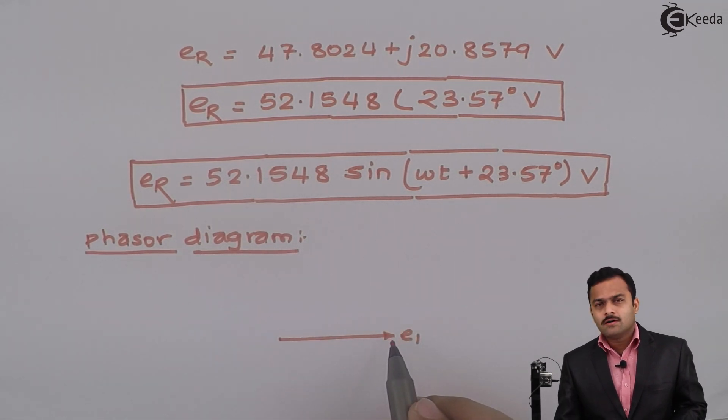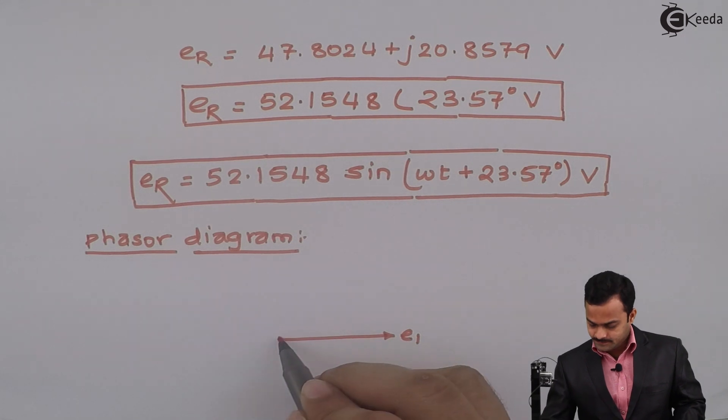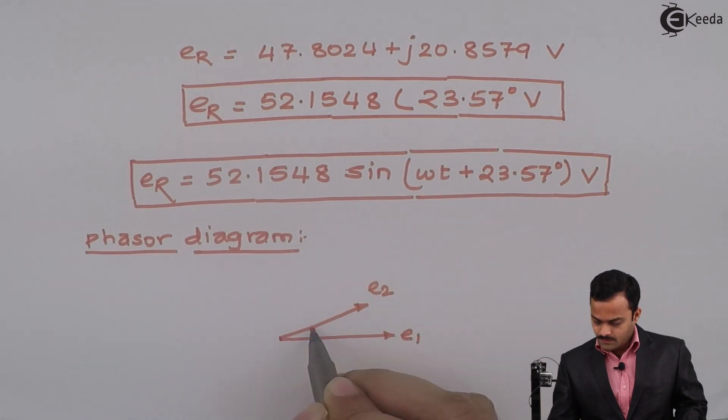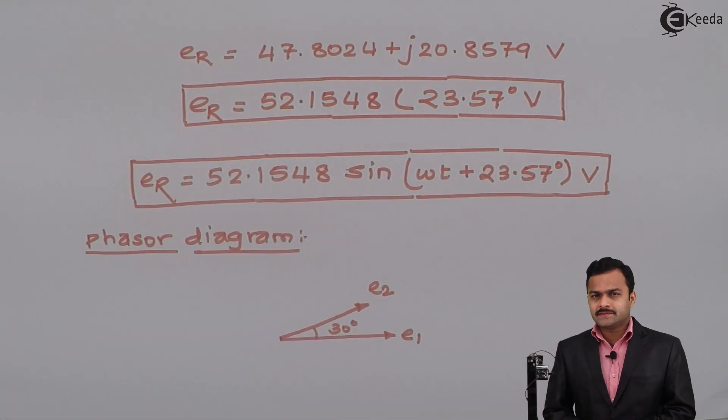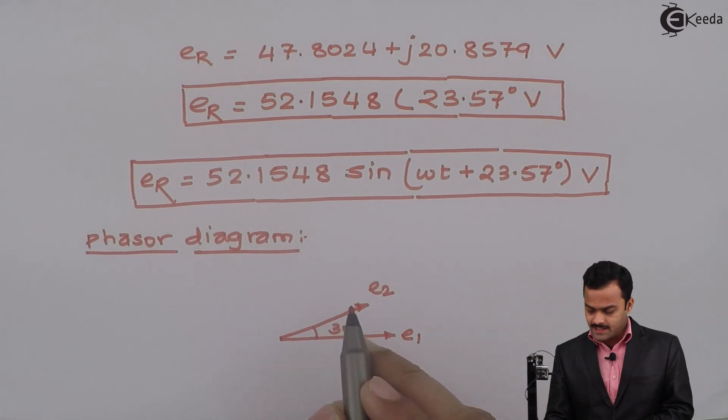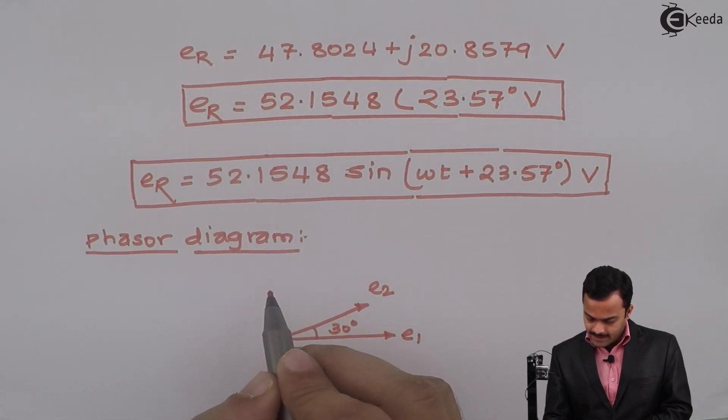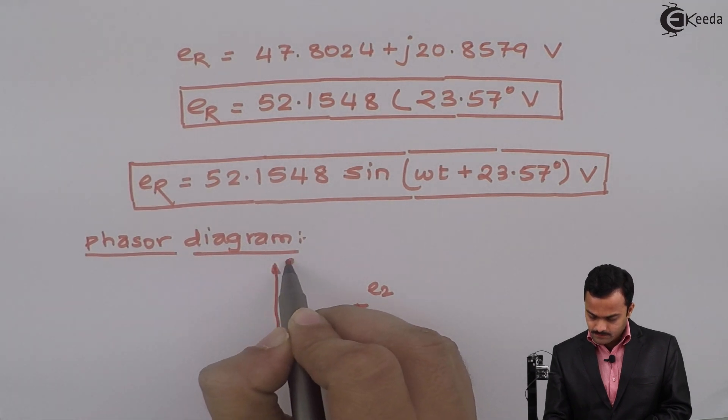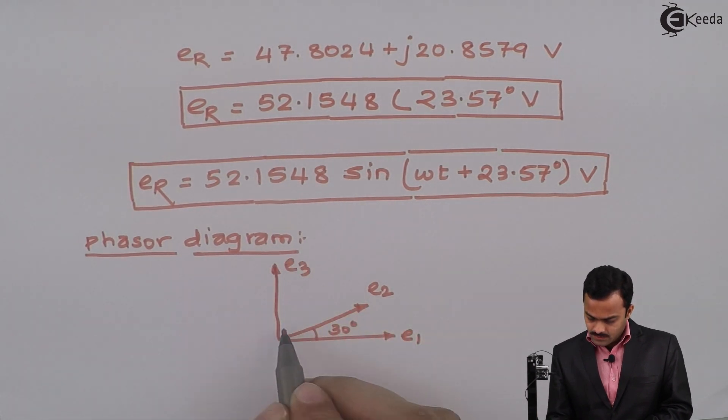E2 is 10 at an angle 30 degrees. So in the anti-clockwise direction it will make an angle 30 degrees with the positive x-axis. E3 is 30 at an angle 90 degrees, so this angle is 90 degrees.